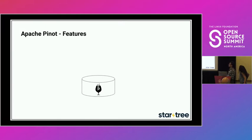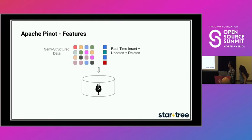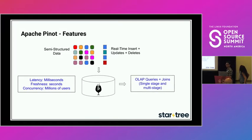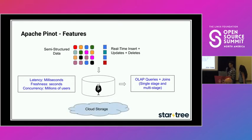Here are Apache Pinot's killer features for user-facing analytics. It supports real-time ingestions, updates, and deletes out of the box. It directly supports semi-structured data ingestion. All data is structured into segment format to support millisecond query latencies. It supports second-level ingestion overhead for freshness. It can serve millions of users concurrently. In terms of query semantics, all traditional OLAP queries plus complex ones like joins are supported. It also natively supports a tiered cloud storage plugin to automatically move cold data to the cloud.